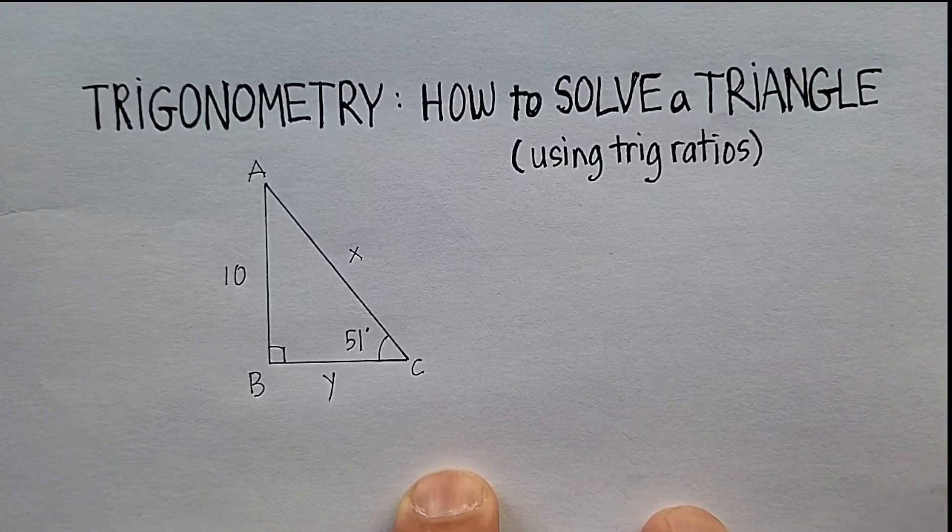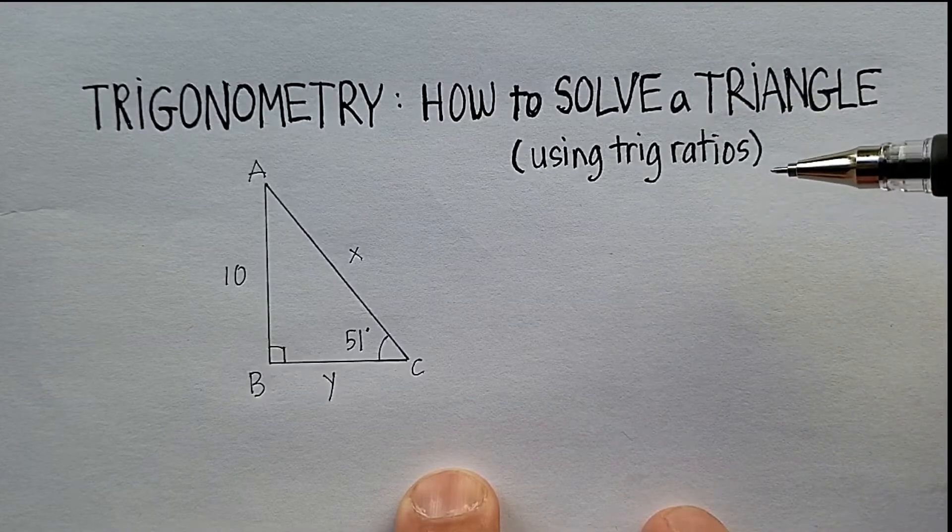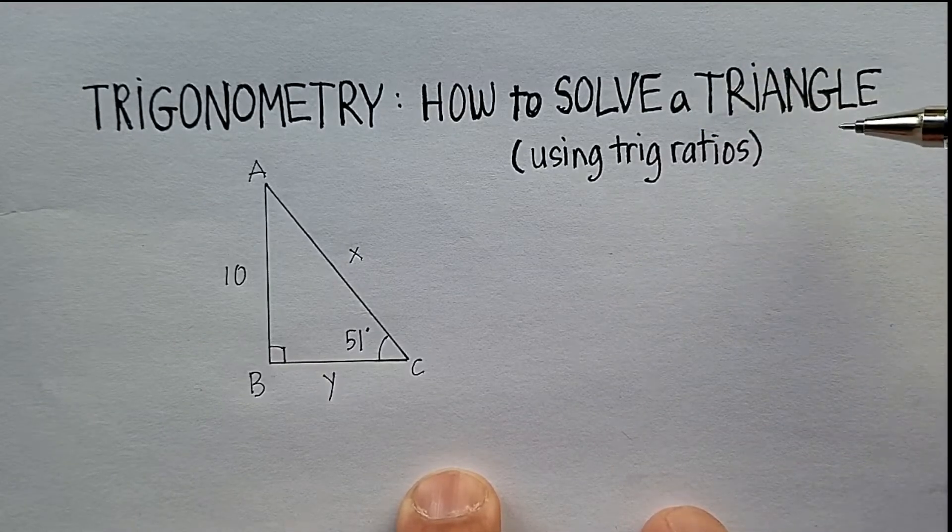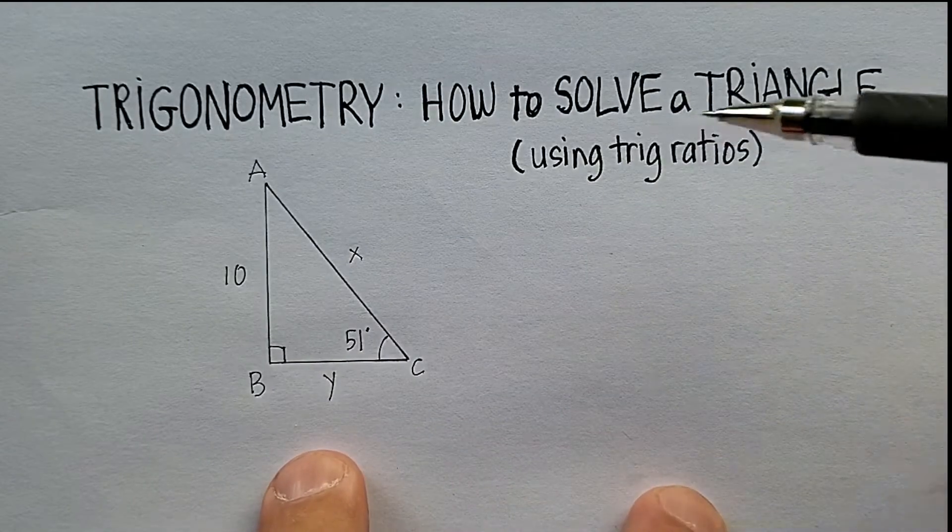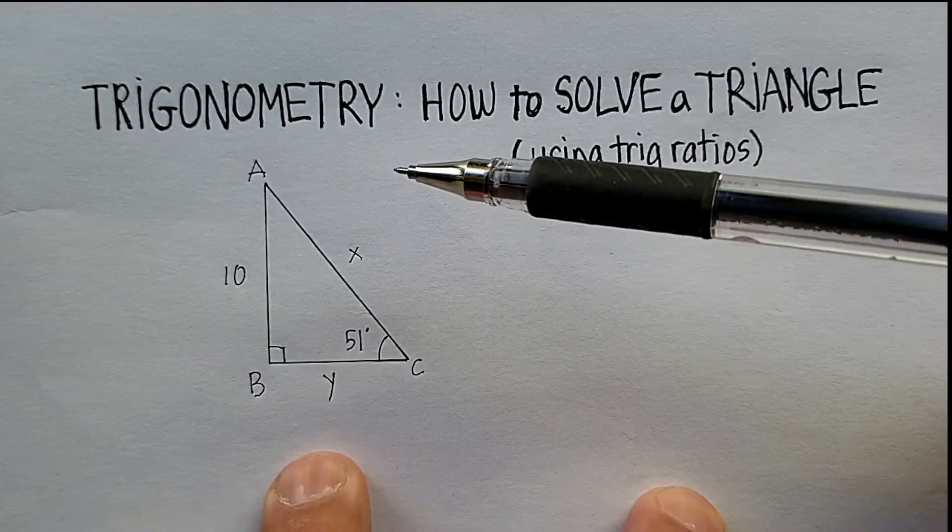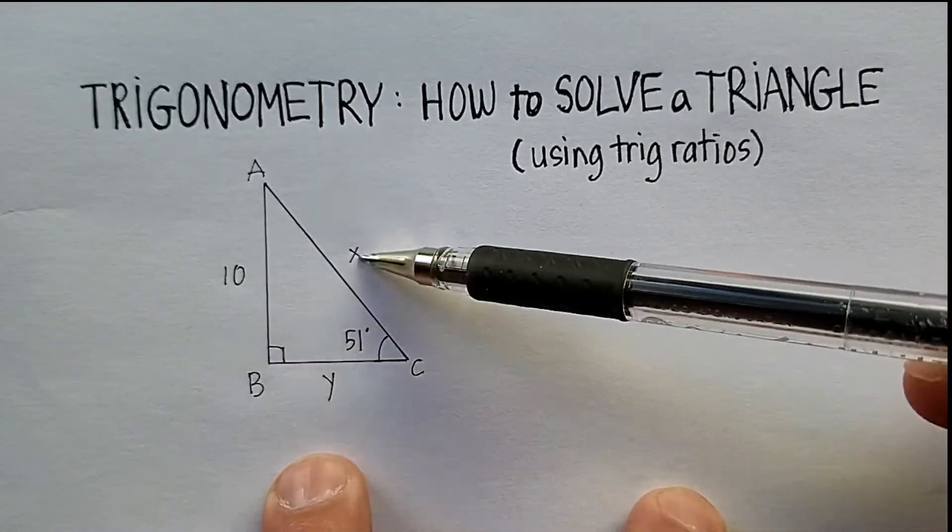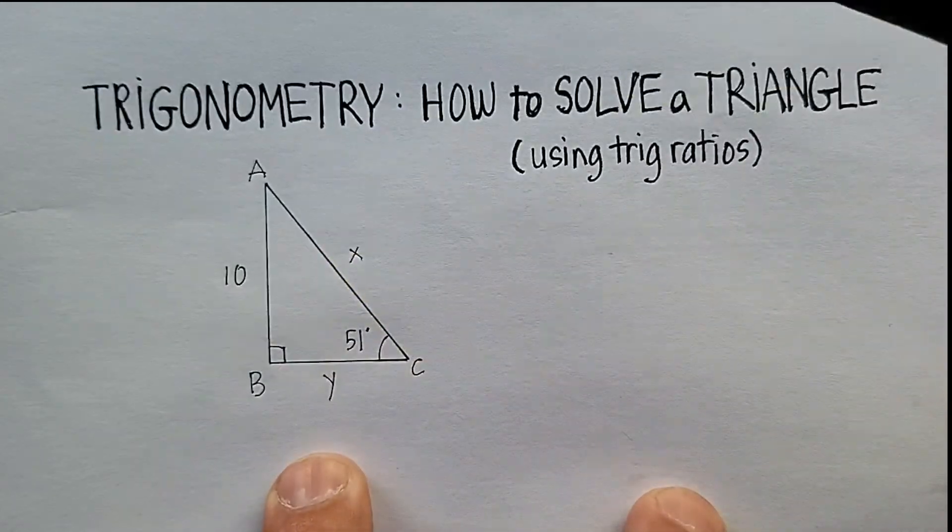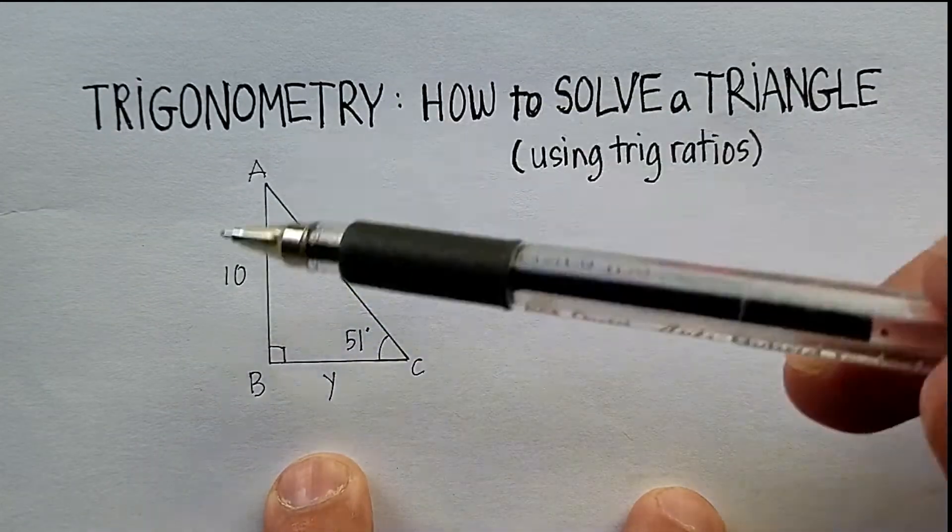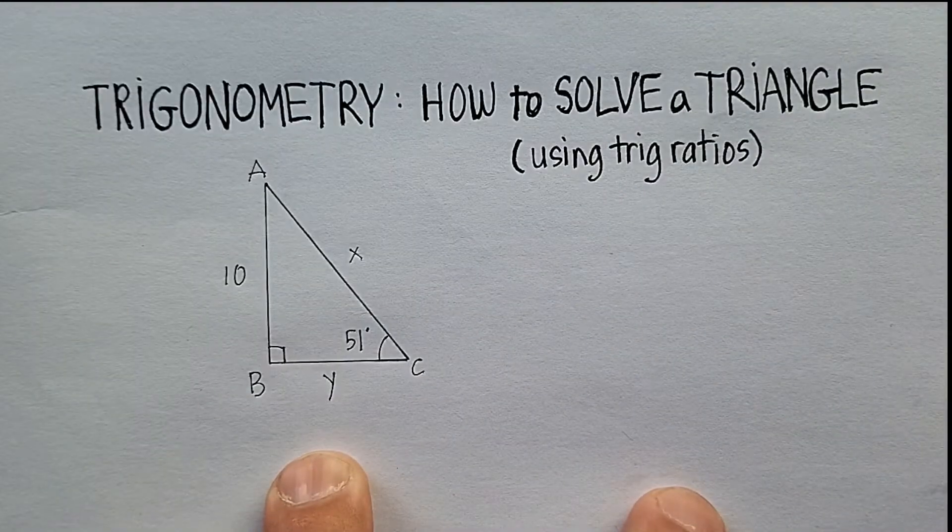Okay, in this video we're going to use trigonometry to solve a triangle using trig ratios. Now, what exactly does it mean to solve a triangle? Well, for our purposes, solving a triangle means that we're going to find each of the sides, the lengths of the sides of a triangle, and each of the angles in a triangle. So, solving it means we're going to basically be able to fill in all the information that might be missing here.